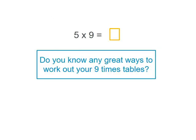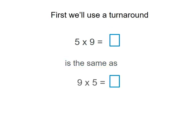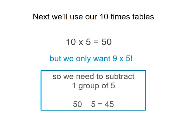Now this is where you may know some great ways to work out your 9 times tables. In this case we're going to use a turnaround. 5 multiplied by 9 is the same as 9 multiplied by 5. Now I know if we use our 10 times tables, 10 times 5 equals 50, but we only want 9 times 5. So we need to subtract one group of 5. 50 minus 5 equals 45.